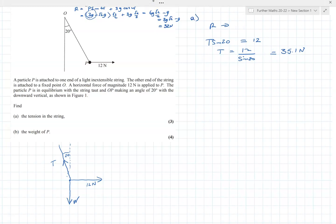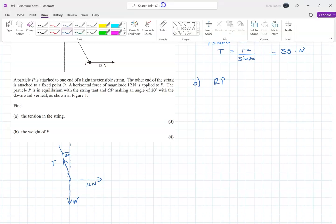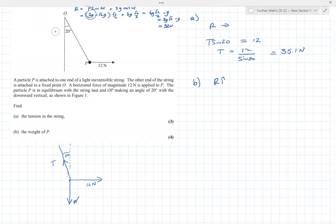Part b, we are going to resolve vertically. If I resolve vertically, we're looking at the component here of T, and that's going to be T cos 20 because it's right next to the angle I've marked, and that's going to counteract with the W.